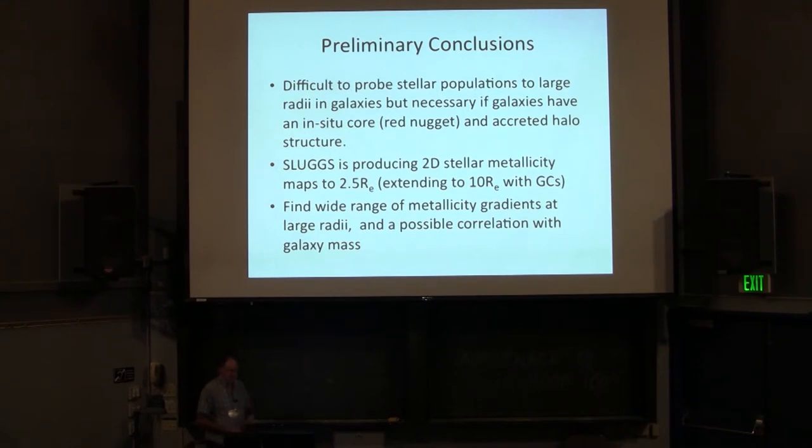So these are my conclusions, very much preliminary. It's very difficult to probe stellar populations out to large radii in galaxies particularly with long slits. But I think it is very necessary if we want to start testing these ideas of elliptical galaxies being an in-situ core, a red nugget if you like, and then their outer halos have been built up over time by the accretion of dwarf galaxies and their globular clusters. We really do need to get into the outer parts of galaxies to see this transition between the inner in-situ core and the outer accreted halo to test these models. One way of doing that is from the SLUGS project. We're looking at the 2D stellar metallicity maps and we're probing out to about two and a half effective radii with this method and we'd like to extend that out to 10 effective radii using the globular clusters as a proxy. Our preliminary results is we find quite a wide range of metallicity gradients at these larger radii and I think there's a hint of a possible correlation with galaxy mass. Thank you very much.